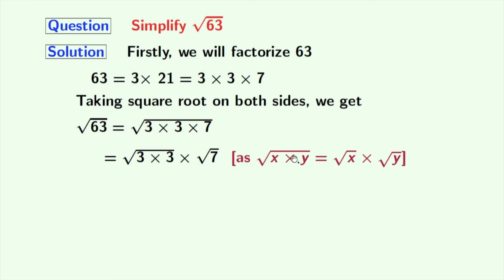As we know that square root of x times y is equal to square root of x times square root of y. Here, x is 3 times 3 and y is 7.